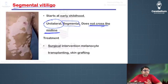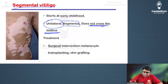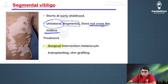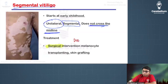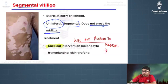In segmental vitiligo, chalky white macules are seen over one side of the body that do not cross the midline. This is treated using surgical intervention because segmental vitiligo is seen from birth and does not respond to medical treatments. The usual topical agents or phototherapy given for non-segmental vitiligo will not work here.